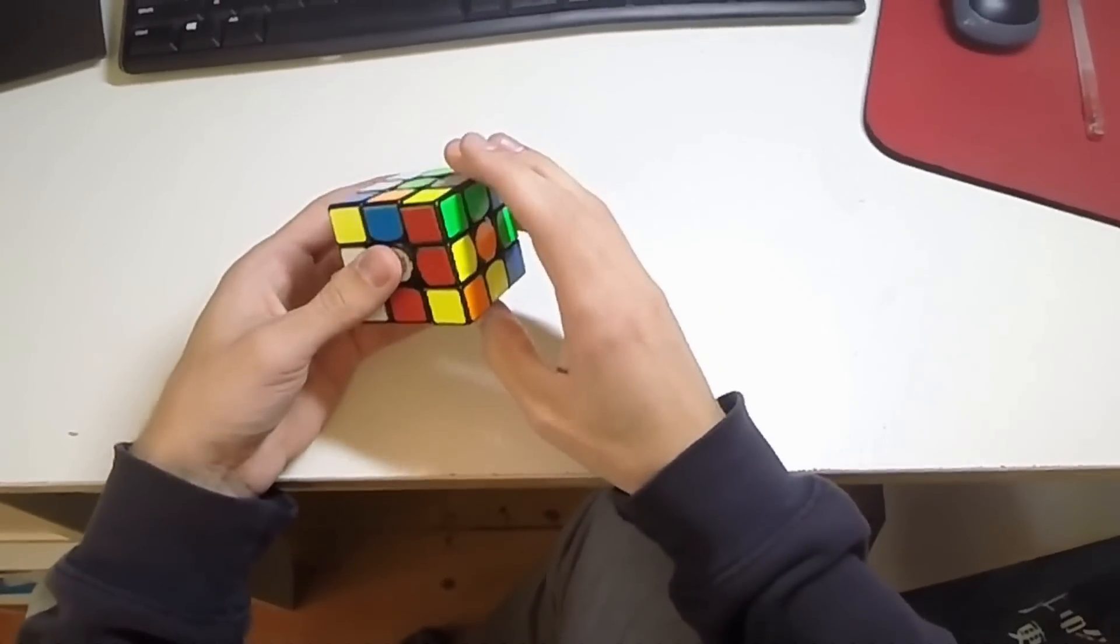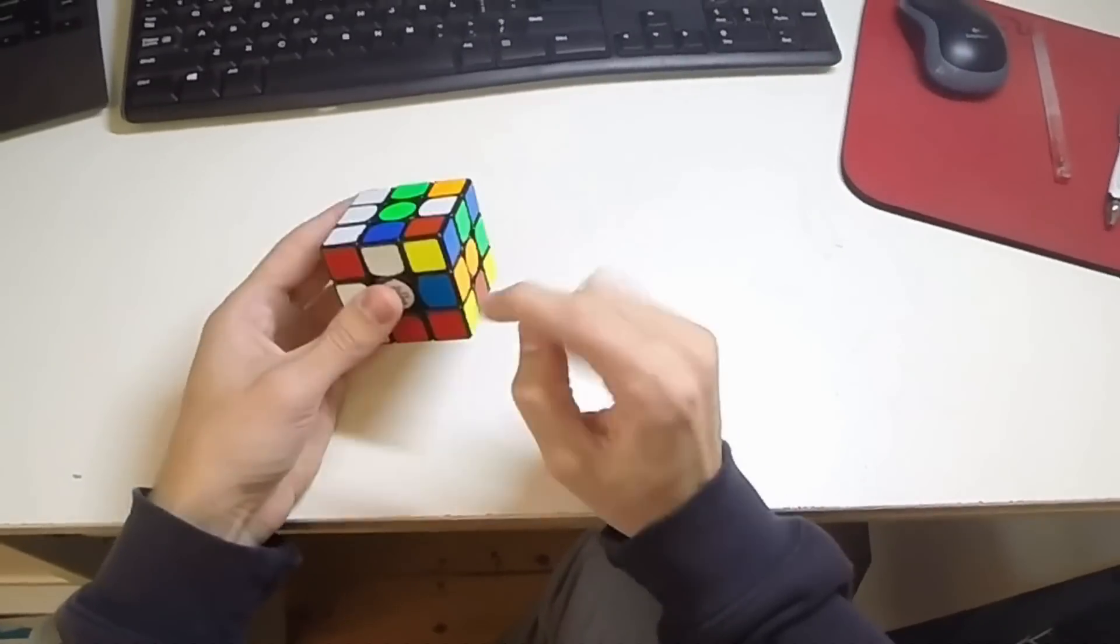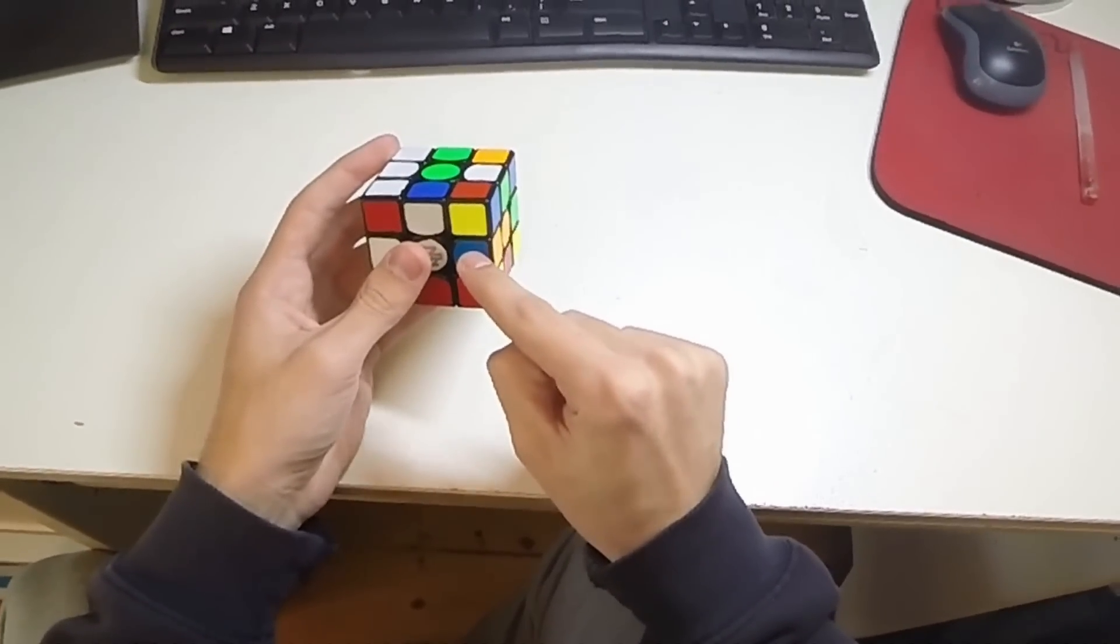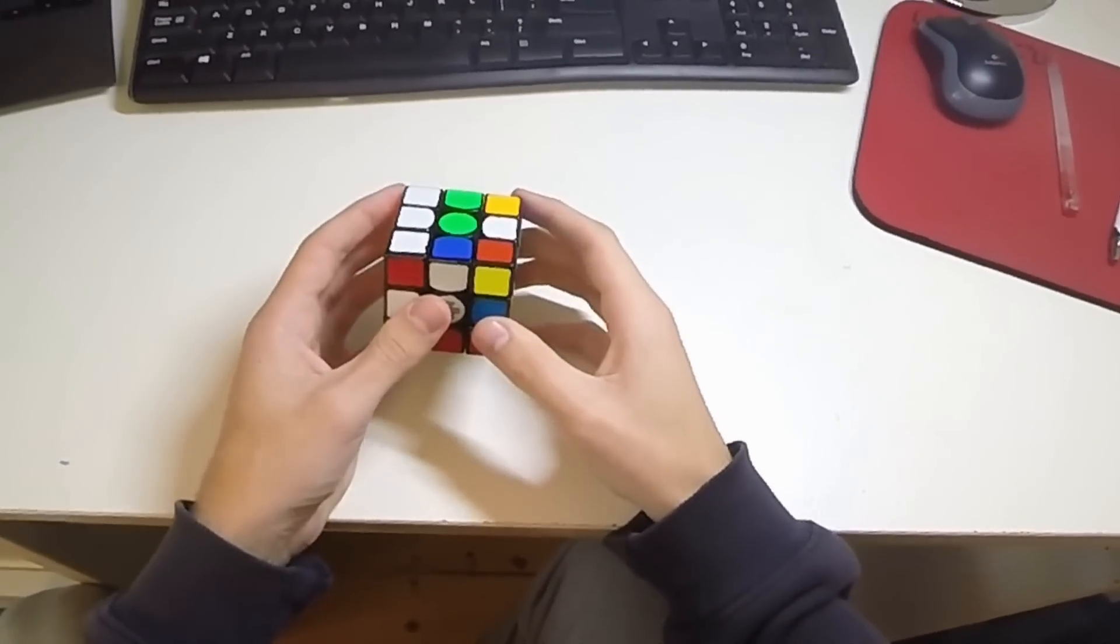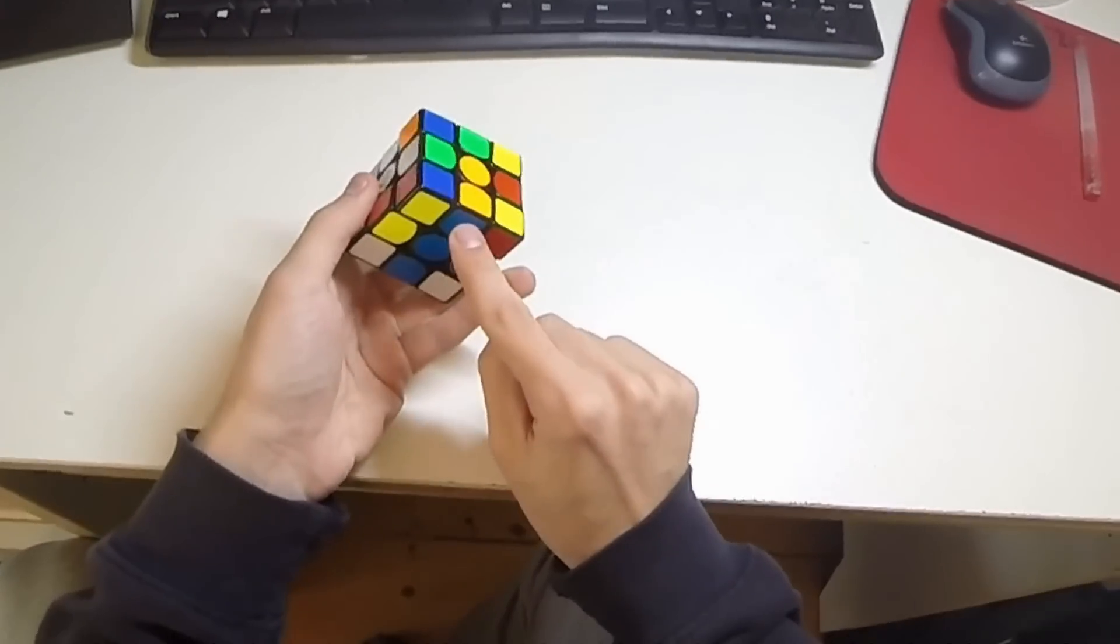So what we can do is R' to put this edge in, Df to align these and move this edge in position, and then do R' again to pair these two up and put this edge in.